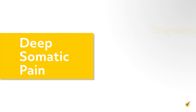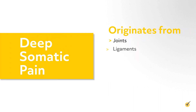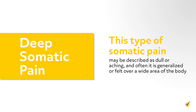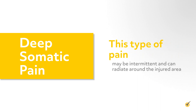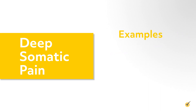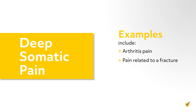Deep somatic pain originates from joints, ligaments, tendons, muscles, bones, and fascia. This type of somatic pain may be described as dull or aching, and often it is generalized or felt over a wide area of the body. This type of pain may be intermittent and can radiate around the injured area. Examples of deep somatic pain include arthritis pain, pain related to a fracture, metastatic bone pain, and postoperative pain.